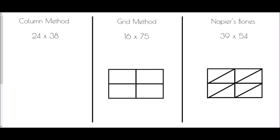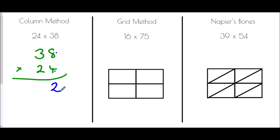Now we're going to try each of those methods with two-digit numbers multiplied by two-digit numbers. For the column method we've got 24 times 38. I'm going to put the smaller number at the bottom, so it's 38 times 24. First, 4 times 8 is 32 — write the 2 for the units and carry the 3. Then 4 times 3 is 12, plus the 3 carried over, is 15. So 4 times 38 is 152.